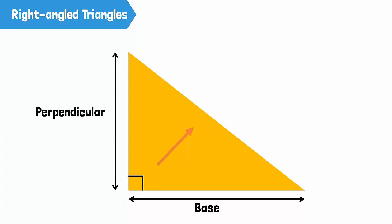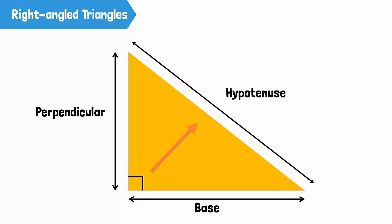The side opposite the right angle is always called the hypotenuse. You can see that the hypotenuse is the longest side of the triangle.